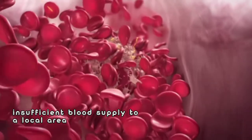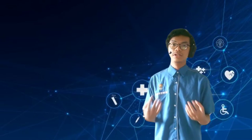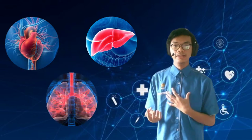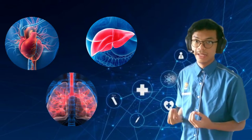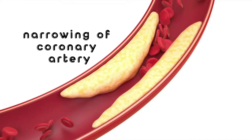In today's world, the number one disease that causes a lot of deaths in Malaysia is ischemic heart disease. Ischemia is defined as insufficient blood supply to a located area, resulting from a blockage of the blood vessel supplying that area. Ischemic heart disease, also known as coronary heart disease or coronary artery disease, refers to a heart problem caused by the narrowing of the coronary artery which supplies blood to the heart muscles.